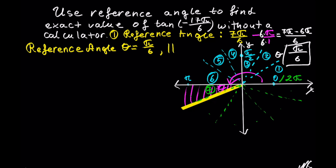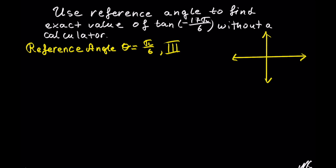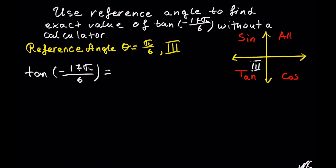And the angle falls in the third quadrant. The reason we note where the angle falls is because it tells us whether tangent is positive in that quadrant. All students take calculus: all trig functions are positive in the first quadrant, sine and its reciprocal in the second quadrant, tangent and its reciprocal in the third quadrant, and cosine and its reciprocal in the fourth quadrant. Since the angle falls in the third quadrant, tangent of negative 17 pi out of 6 will have a positive value and it will be equivalent to tangent of pi out of 6.